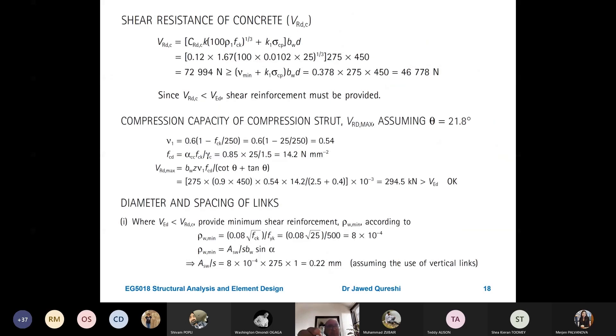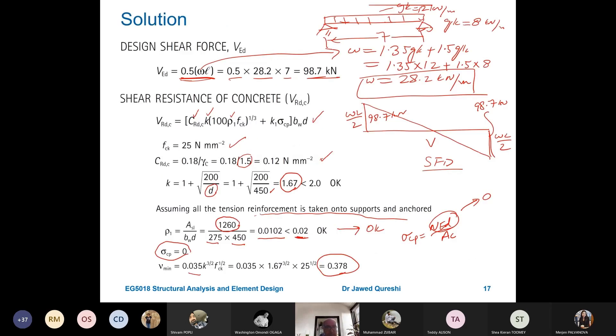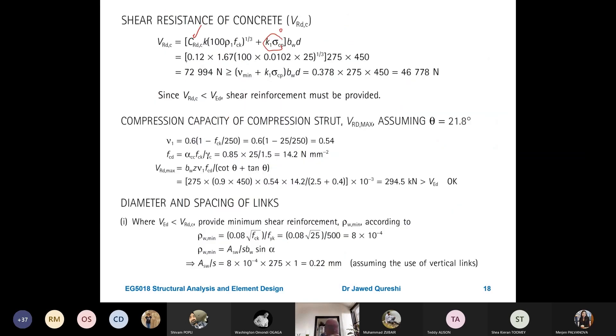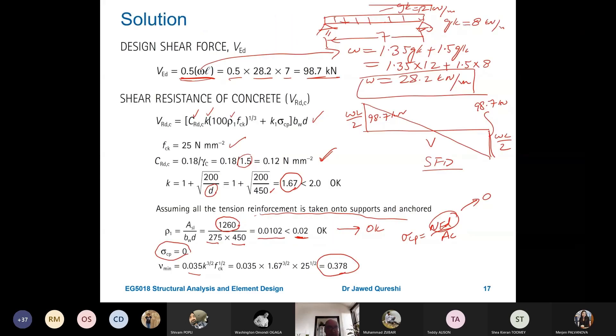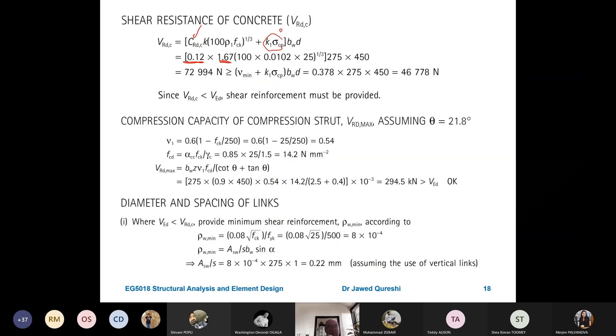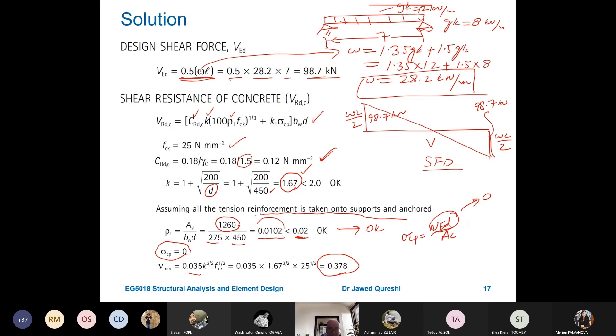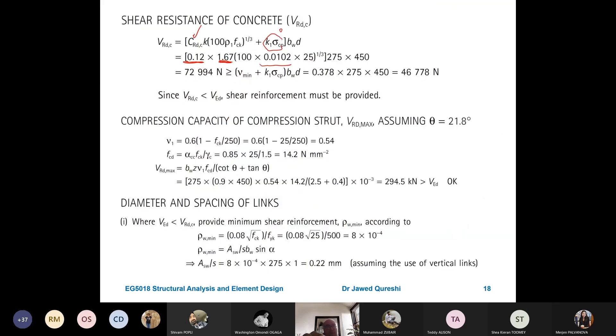So, now I have all these values. This is Sigma CP is 0 because there is no axial load. CRDC I have determined earlier from here 0.12. And value of K is 1.67. 100 comes from the formula. Rho is the reinforcement ratio which is 0.0108. And Rho is determined here 0.0108. And then you multiply it with FCK which is 25. And then there is a whole power 1 over 3. Because this term K1 into Sigma CP is 0, that's why this whole expression now is going to be multiplied with BW into D.